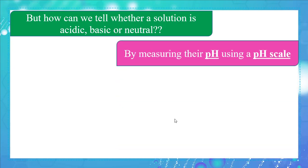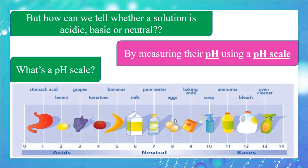But how can we tell whether a solution is acidic, basic, or neutral? We can measure their pH using a pH scale. The pH scale is a scale of numbers from 0 to 14. pH values lower than 7 correspond to acidic solutions, pH values higher than 7 correspond to basic solutions, and pH values equal to 7 correspond to neutral solutions.